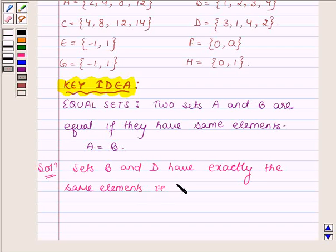That is 1, 2, 3, and 4, though in different order. Thus we can say that the set B is equal to D.